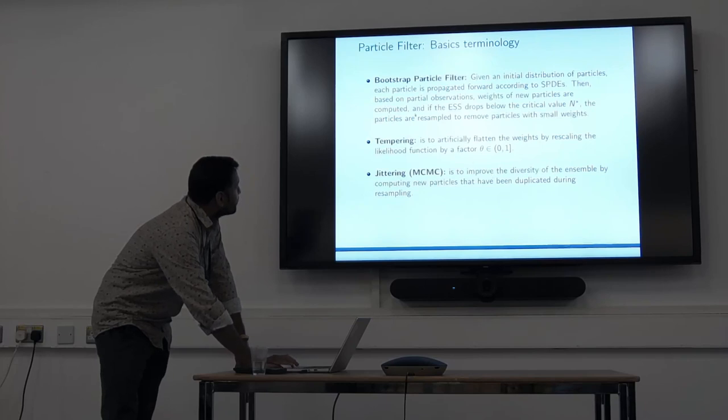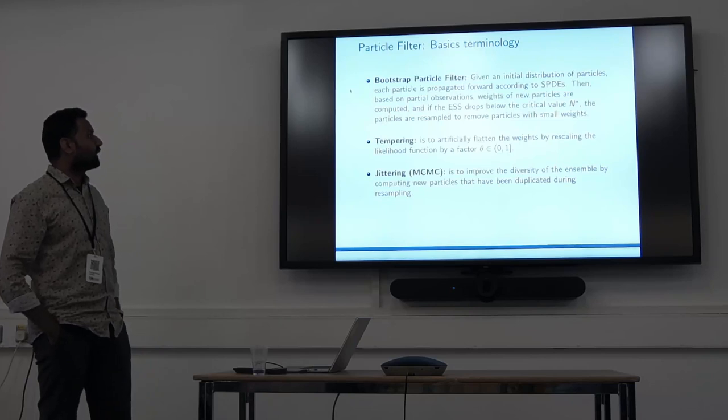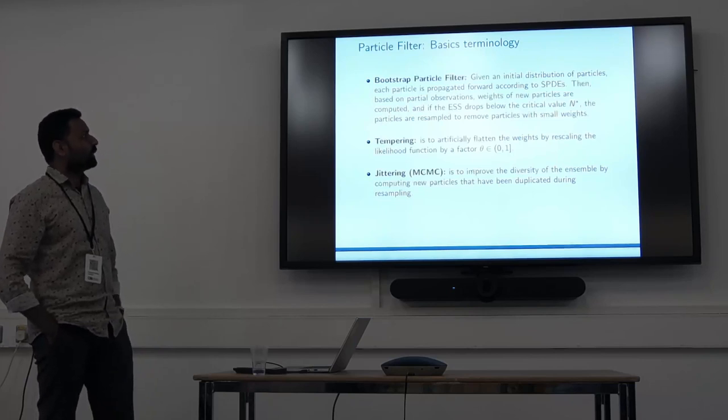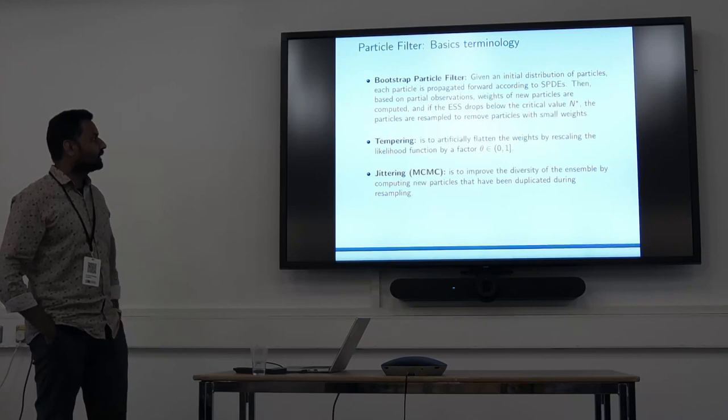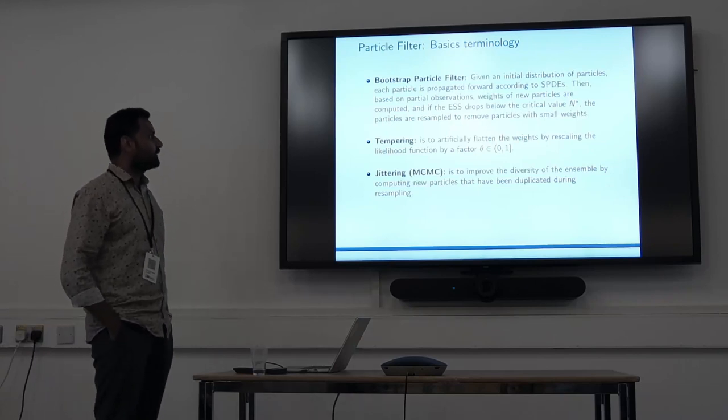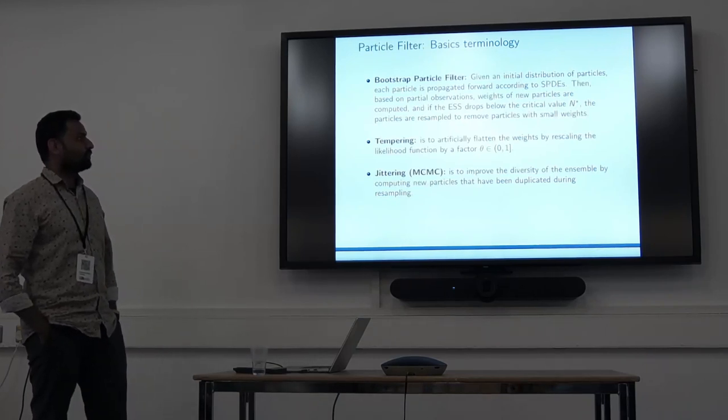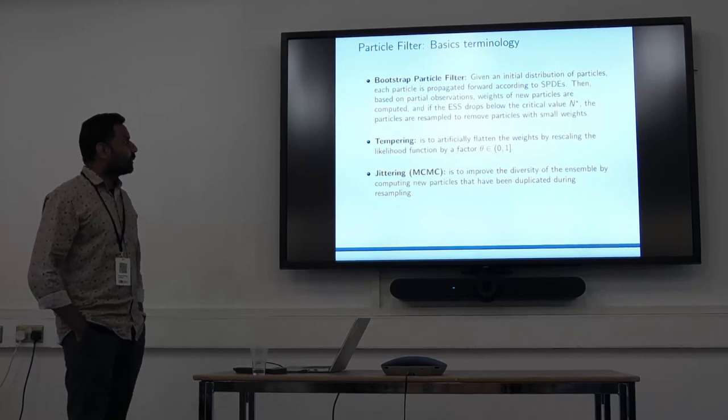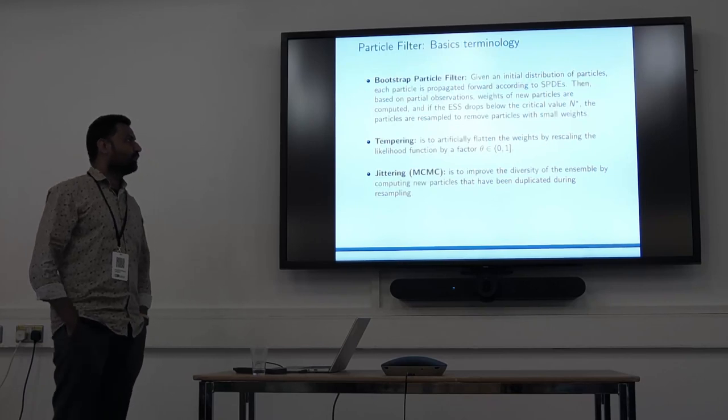These are some basic terminology of particle filters. In bootstrap particle filter, suppose we have the initial distribution of particles. Each particle is propagated forward using the forward model, then based on the partial observations we have, we can calculate the weight. ESS is the effective sample size. If this drops below a critical value, 70, 80, or 50 percent, the particles are sampled to remove particles with smaller weights by higher weights.